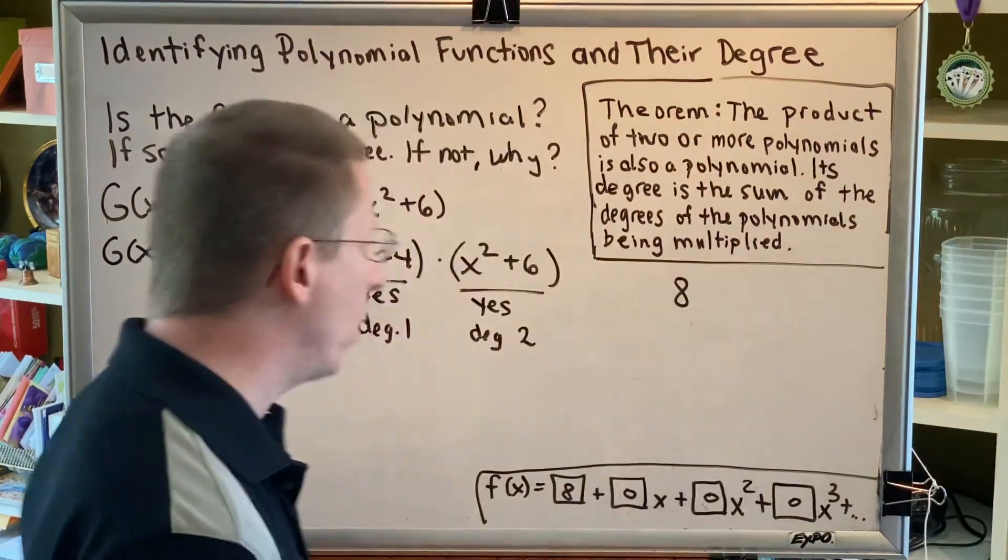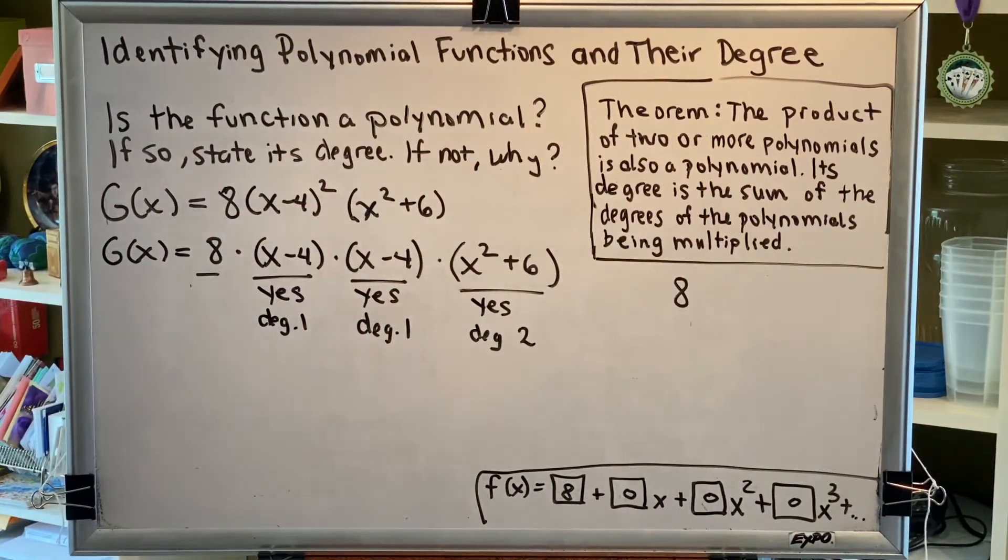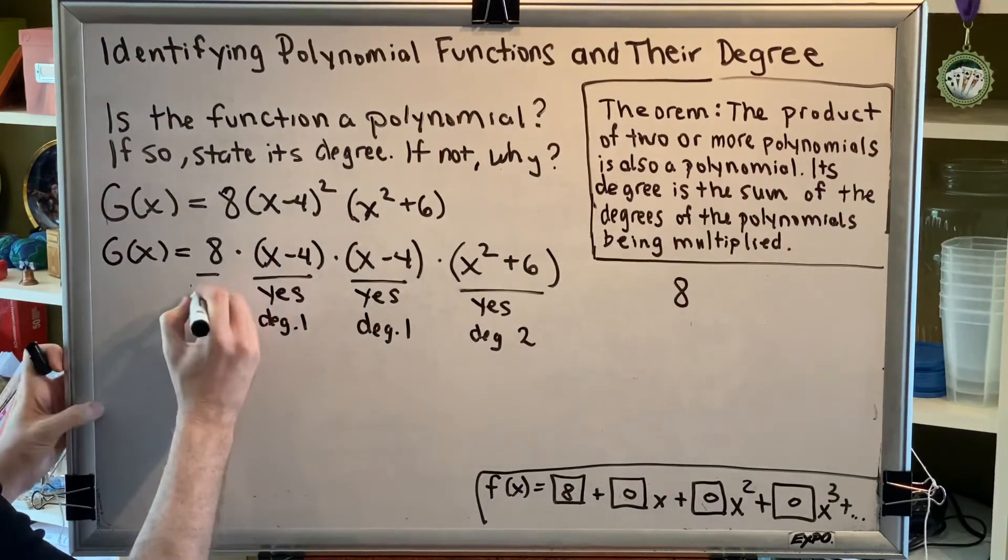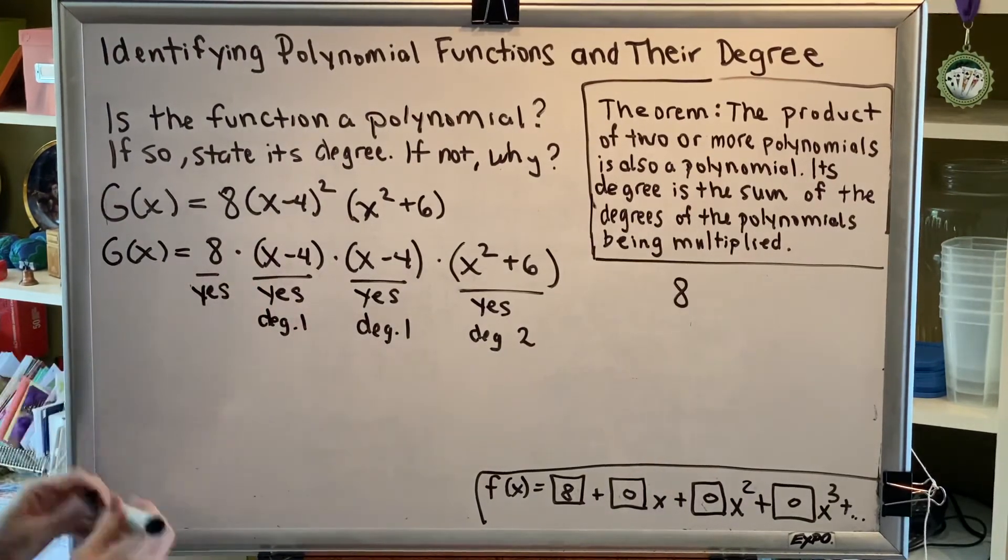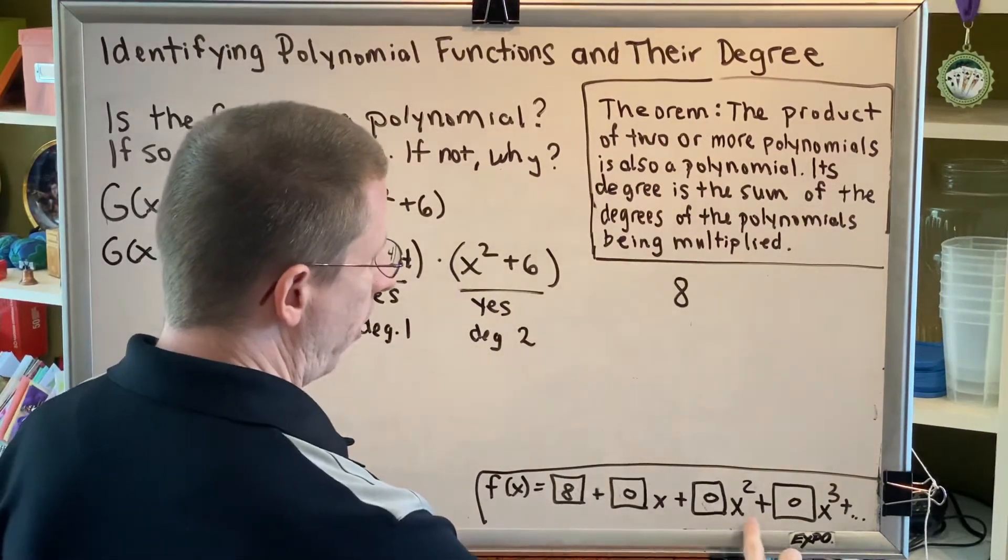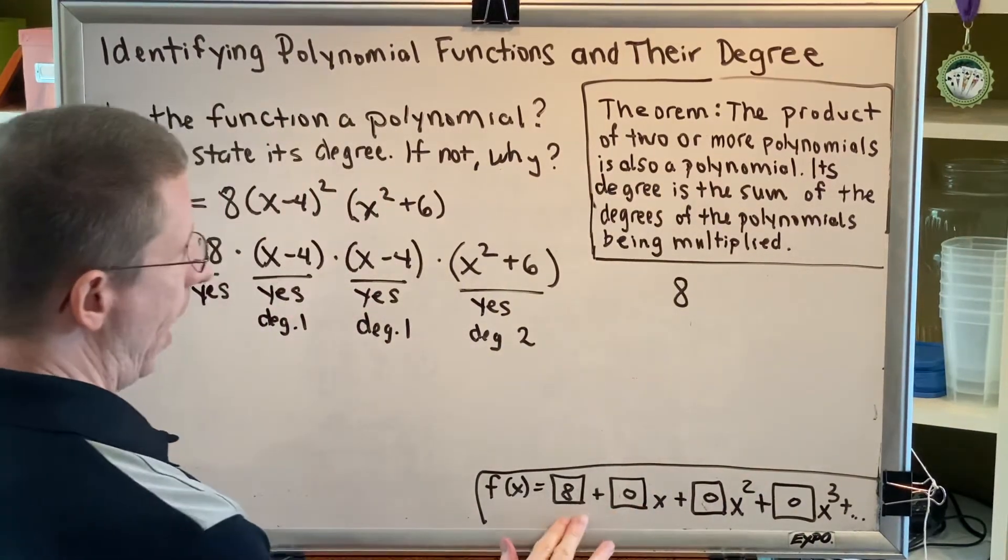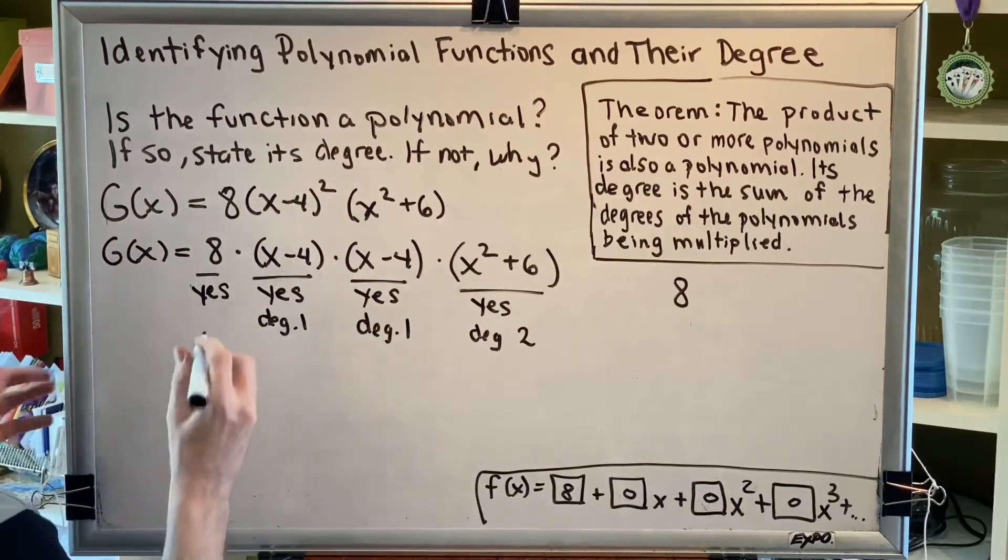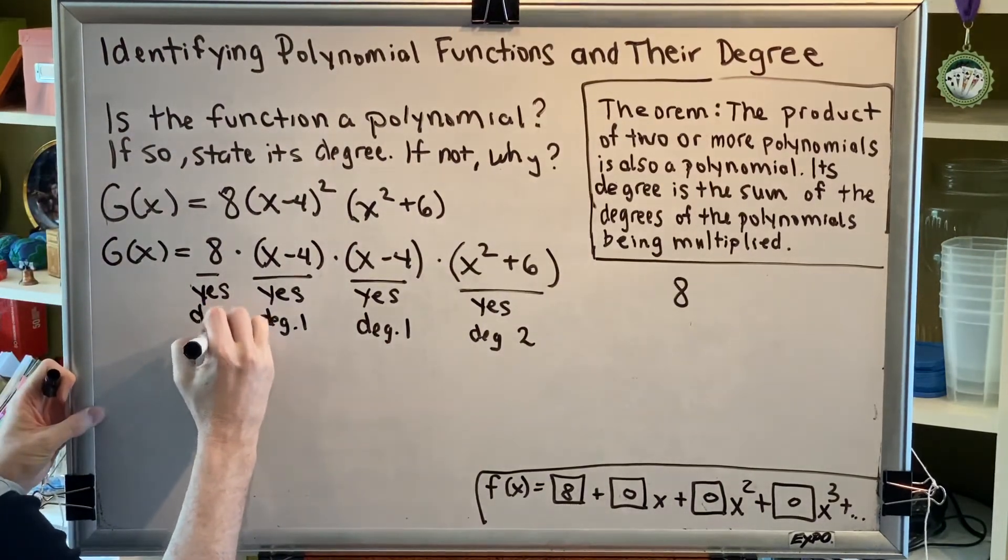So 8 is a polynomial, even though it only has one term. Yes, polynomial. Interestingly, the degree is 0. If you look at it, we have x to the third, x to the 2, x to the 1, and no x at all. So this is x to the 0. Therefore, the degree is 0.